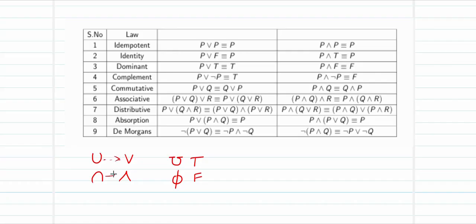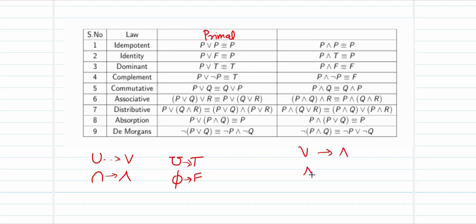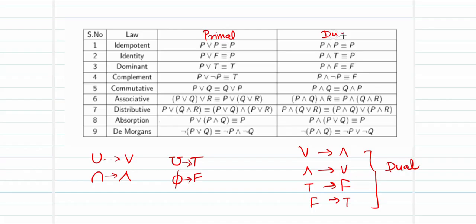If we make suitable replacements for our set theory laws, the same 9 laws by the same names we have seen will work perfectly well for logic. Now, the original statement is called the primal — that is, your base statement — and the statement obtained by replacing ∨ with ∧, ∧ with ∨, true with false, and false with true is called the dual.